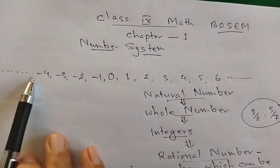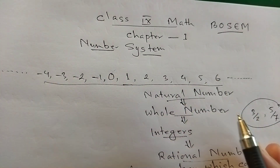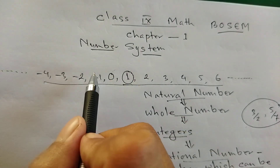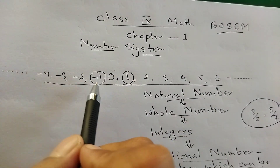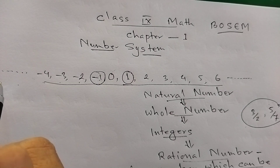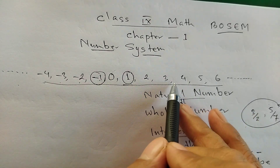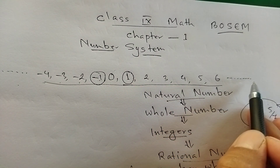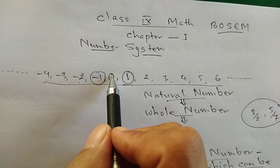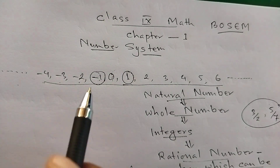It includes negative integers and positive integers. The positive integers are 1, 2, 3... The negative integers are minus 1, minus 2, minus 3, minus 4, minus 5. Zero is neither positive nor negative — zero is just 0.